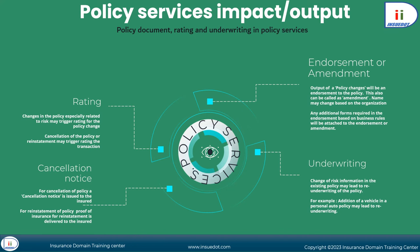The output of a new business transaction is a policy document. The output of a policy change is an endorsement or amendment to the policy, which may be called by a different name depending on the organization. Endorsement or amendment is the commonly used name for the output of a policy change transaction.